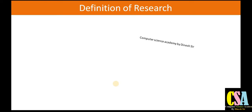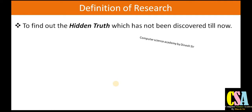There are so many definitions available in books and presentations on research. After deep-diving into all these terminologies, we can describe several types of definitions. The first definition is: research may be possible to find out the hidden truth which has not been discovered yet. It means we should search out and retrieve that particular hidden truth — that knowledge which is hidden — and that comes under the definition of research.